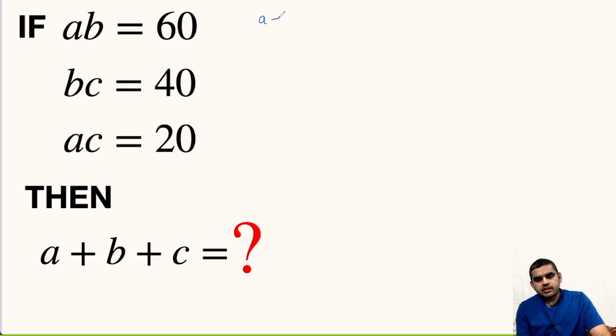We know the formula: A plus B plus C whole squared is equal to A square plus B square plus C square plus 2 times AB plus BC plus CA.